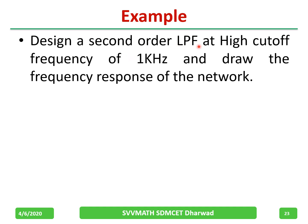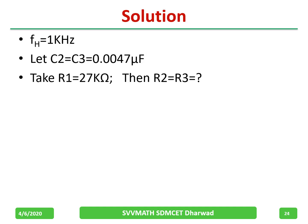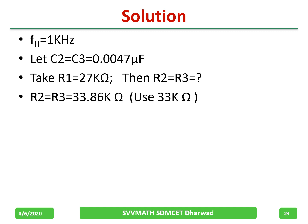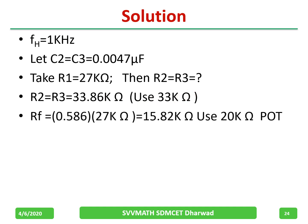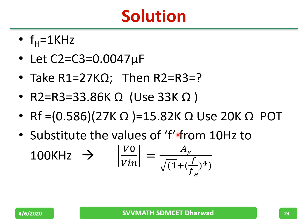For a second-order low pass filter example at 1 kHz: set C2 = C3 = 0.0047 µF and R1 = 27 kΩ. Calculate R2 = R3 using the equation — the result is 33.86 kΩ; use a 33 kΩ potentiometer. Rf equals 0.586 multiplied by 27 kΩ = 15.82 kΩ; if not available, use a 20 kΩ pot and adjust. Then substitute frequency values from 10 Hz upward into the gain equation to theoretically calculate and compare with practical measurements.